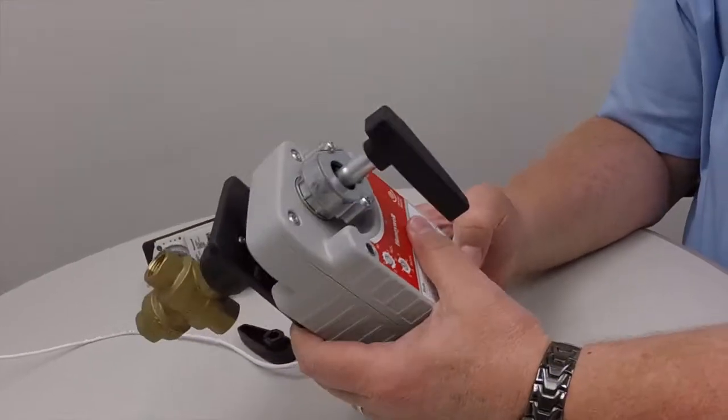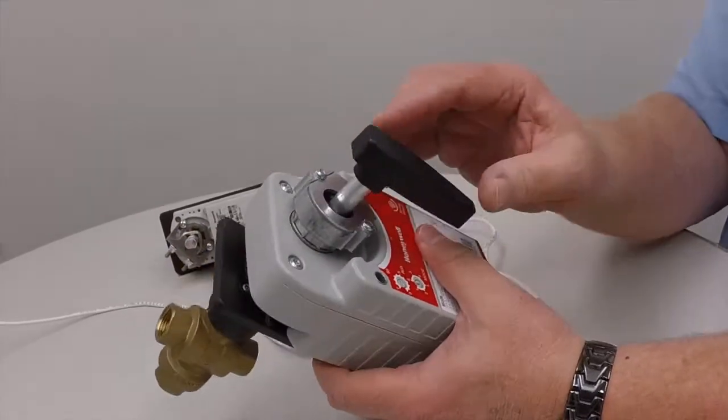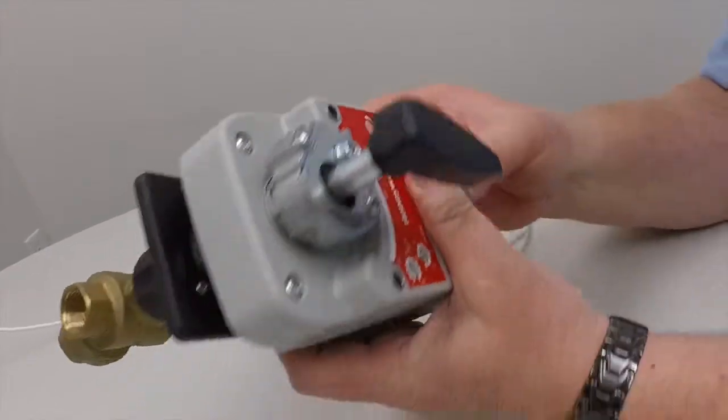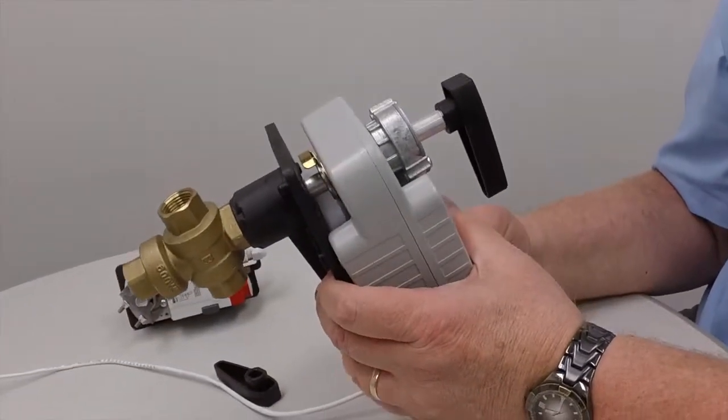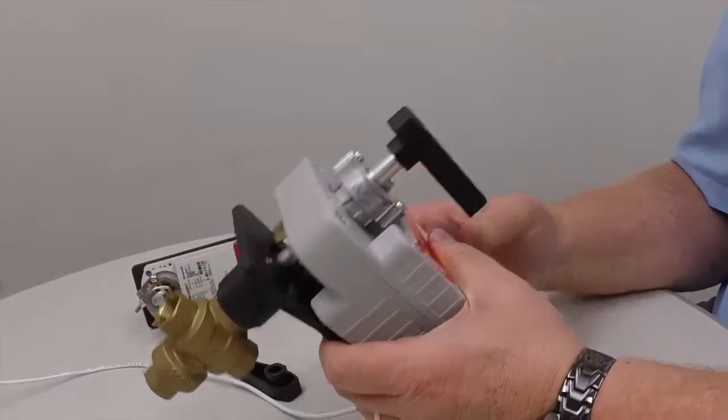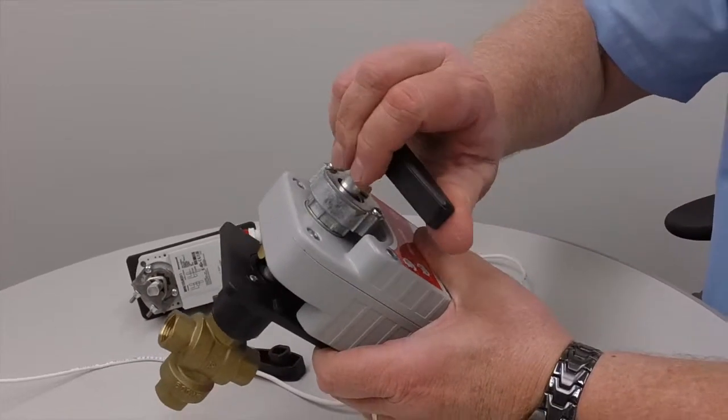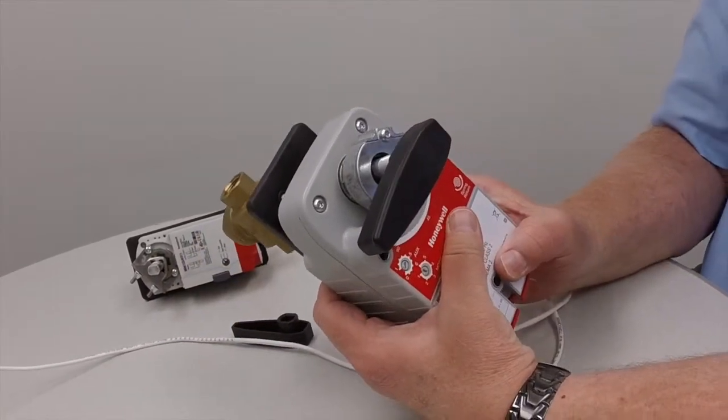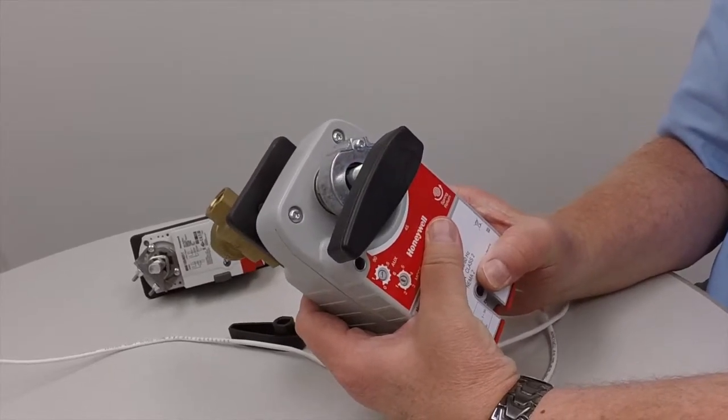And on this particular three-way valve, it's the same way as the two-way. When the stem is going the same direction as the valve, then that is open. And then when you turn it 90 degrees to there, that is the closed position.